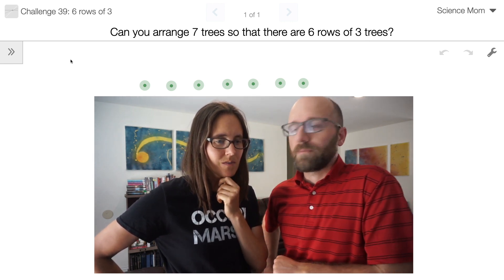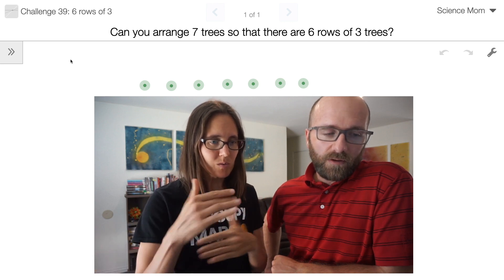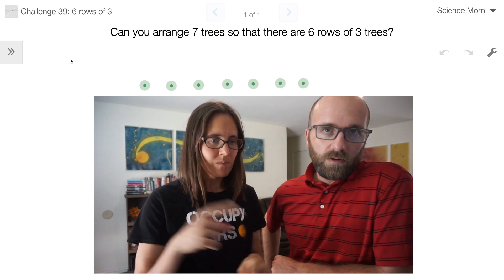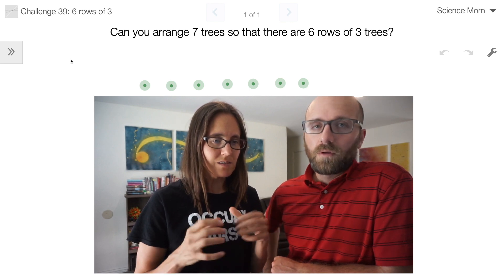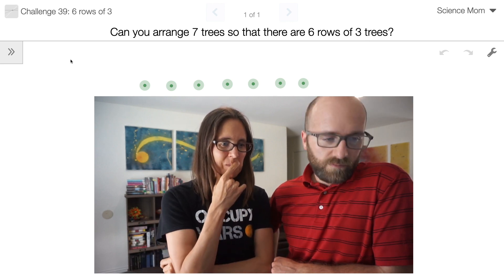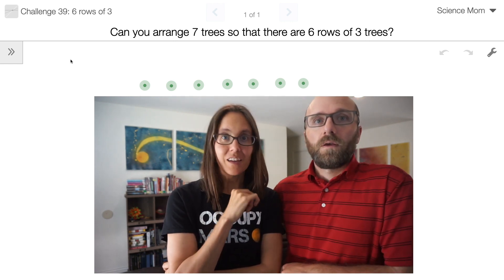Call them trees in this problem. Okay, six rows of three. There's seven of them, and obviously my rows don't need to be parallel and multiple trees can be in different rows. That's right, yeah. Same tree can be in different rows. Interesting, okay.